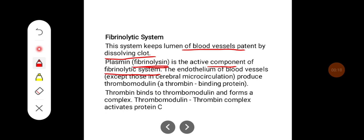The endothelium of blood vessels, except those in cerebral microcirculation, produce thrombomodulin, a thrombin-binding protein.